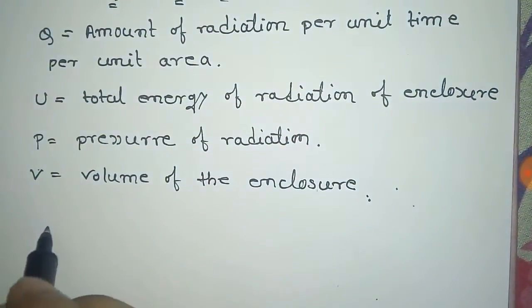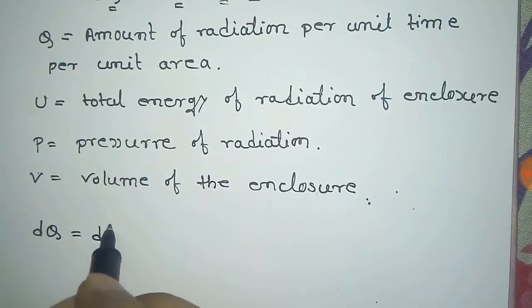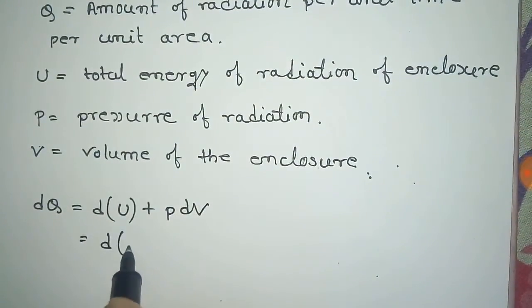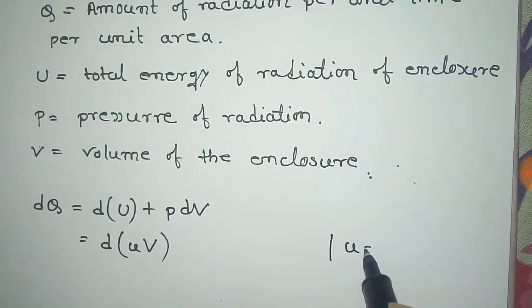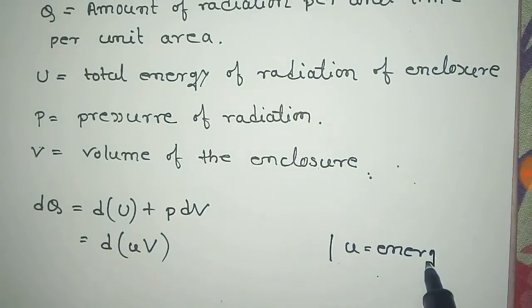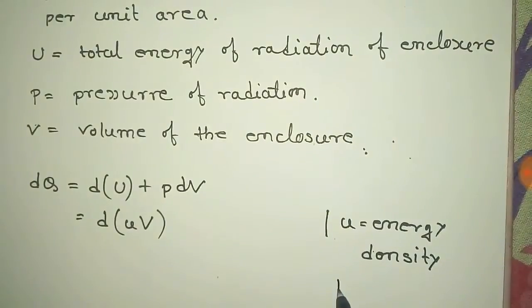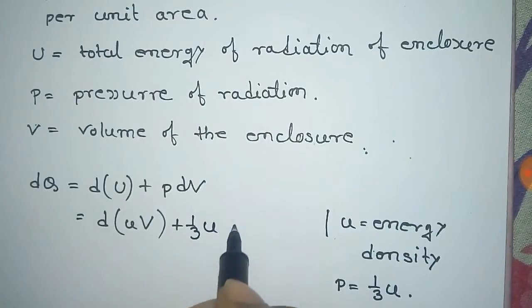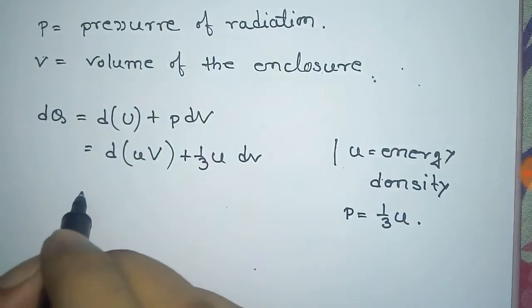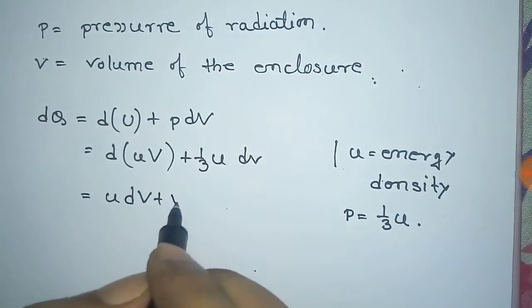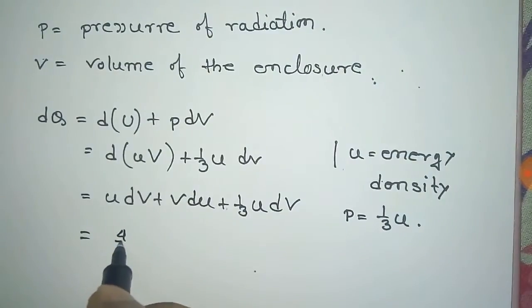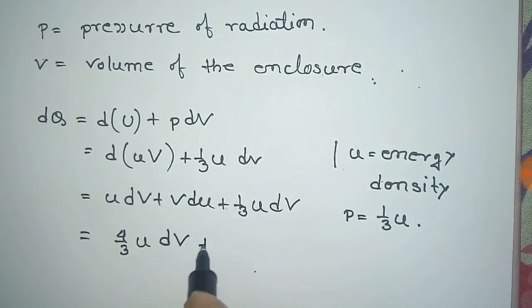From dQ = dU + PdV, we can write it as d(uV) + PdV, where small u is the energy density of the enclosure and V is the volume, so U = uV. P is one-third u. Using the derivation law on uV, we get u dV + V du + 1/3 u dV, which equals 4/3 u dV + V du.